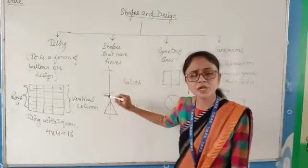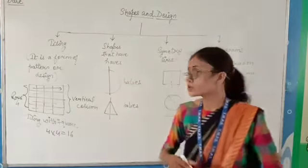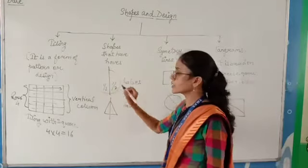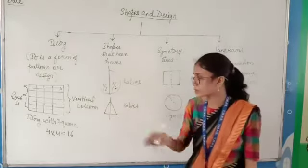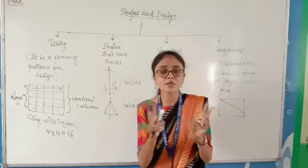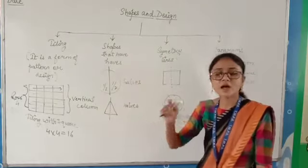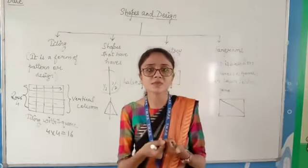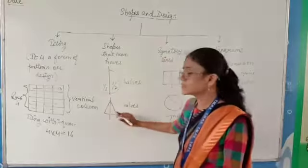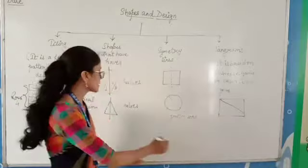Suppose any shape or diagram is given to you and you need to find its half. For example, suppose one chocolate is given to you — if you fold and distribute it among two friends, each gets half. In the same manner, this triangle can also be halved. Any shape can be halved — just draw a line.